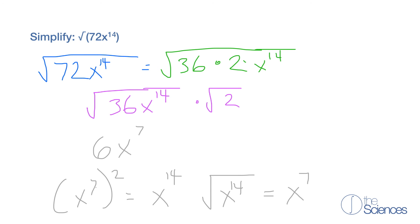So now we have 6 times x to the 7th times the square root of 2. This is our answer.